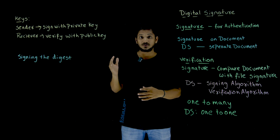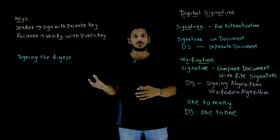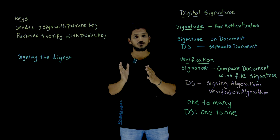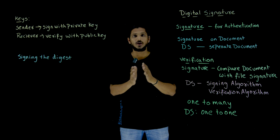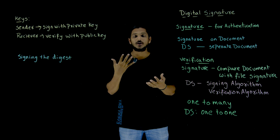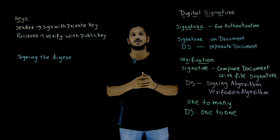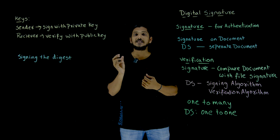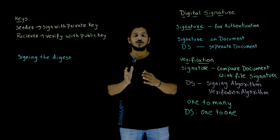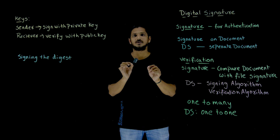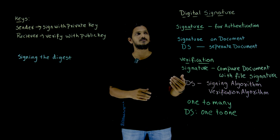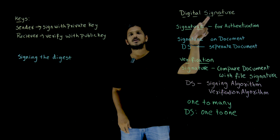In our previous classes we clearly discussed about confidentiality — message confidentiality — meaning we should not show that message to anyone, which is provided using encryption and decryption. Similarly, after that we discussed about message integrity, meaning you should not change the message. The next concept is a digital signature.